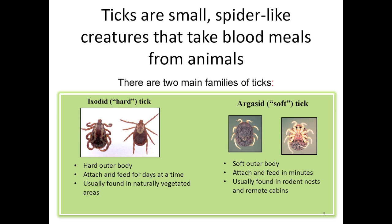Ticks are small, spider-like creatures that take blood meals from animals. The two main families of ticks are Ixodid and Argasid. Both hard and soft ticks may bite humans. Hard ticks have a hard outer body and when they attach to a host, they feed for days at a time. They are found in naturally vegetated areas such as along trails and mixed hardwood forests.